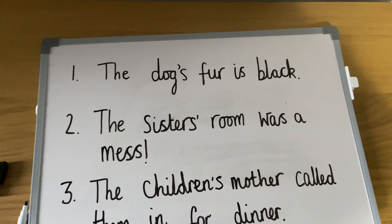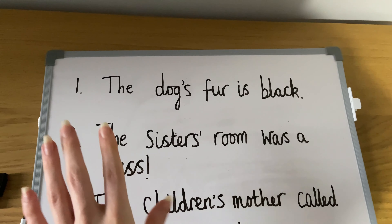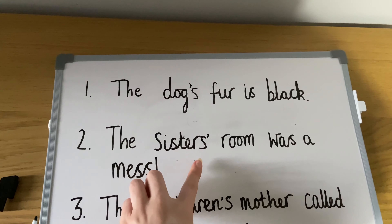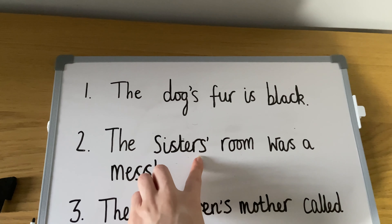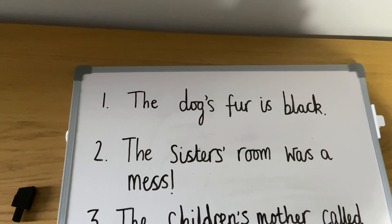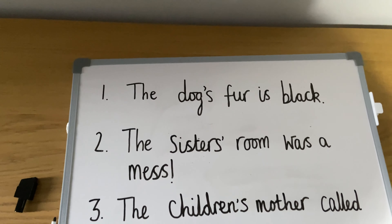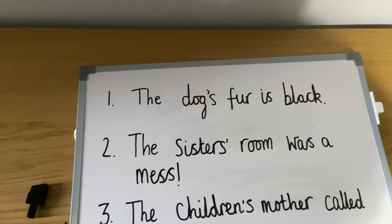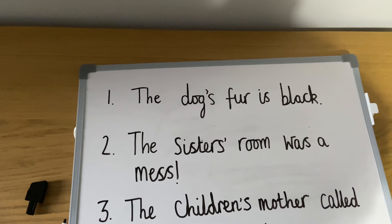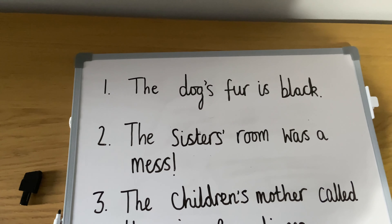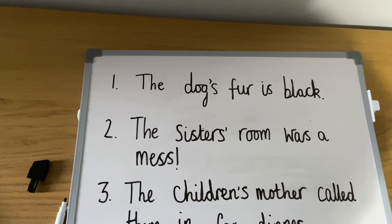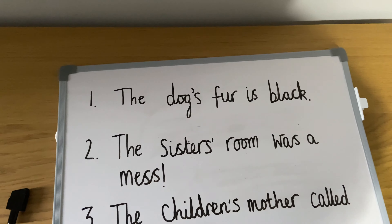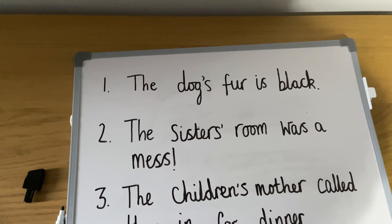In our second example, it's talking about sisters, and the word 'sisters' already ends in an s. So for this one, all we need to do is add our apostrophe onto the end. We don't add another apostrophe s because our s is already there. So now it reads: the sisters' room was a mess — we now know there's more than one sister.